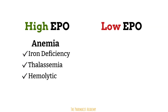In thalassemia, there's a decrease of certain proteins required to make a full hemoglobin, leading to low hemoglobin and subsequently low red blood cell production. The body compensates by amping up the EPO levels to tell the bone marrow to make red blood cells. In hemolytic anemia, we have red blood cell destruction, so the body will try to fix this by increasing EPO to go and increase red blood cell production.